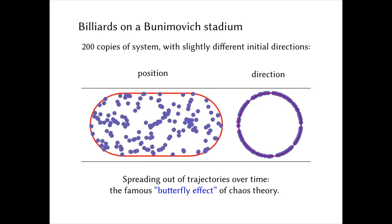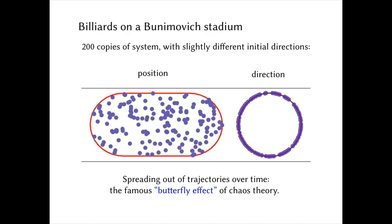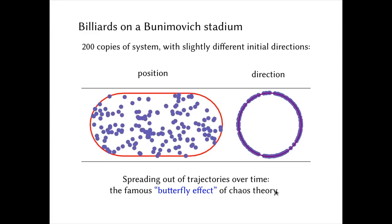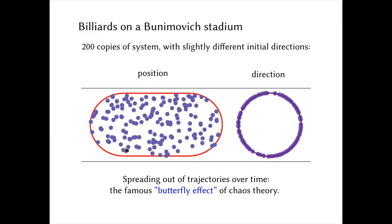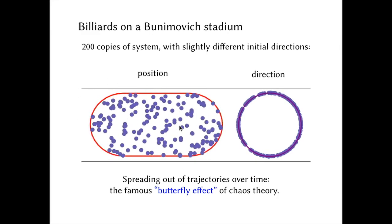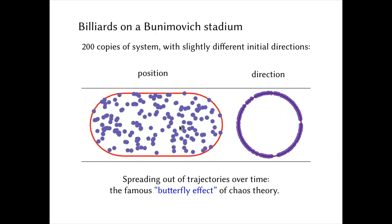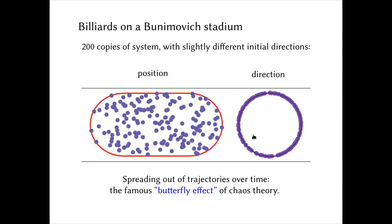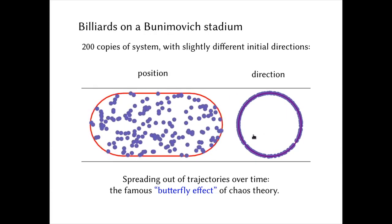From that initial point where all particles were in the same spot with more or less the same direction — a kind of ordered system — we go to a situation where all the particles are now spread almost uniformly throughout the entire volume of the stadium, and almost all possible directions are uniformly exhibited. This is crucial, but we want to somehow quantify it — translate that transition from ordered to disordered into an actual number.